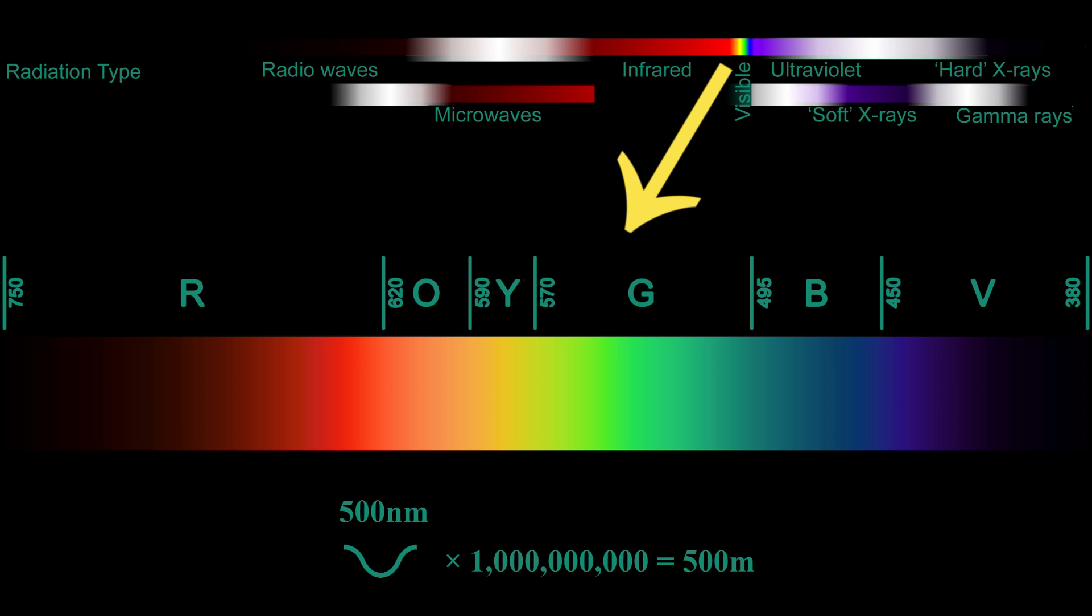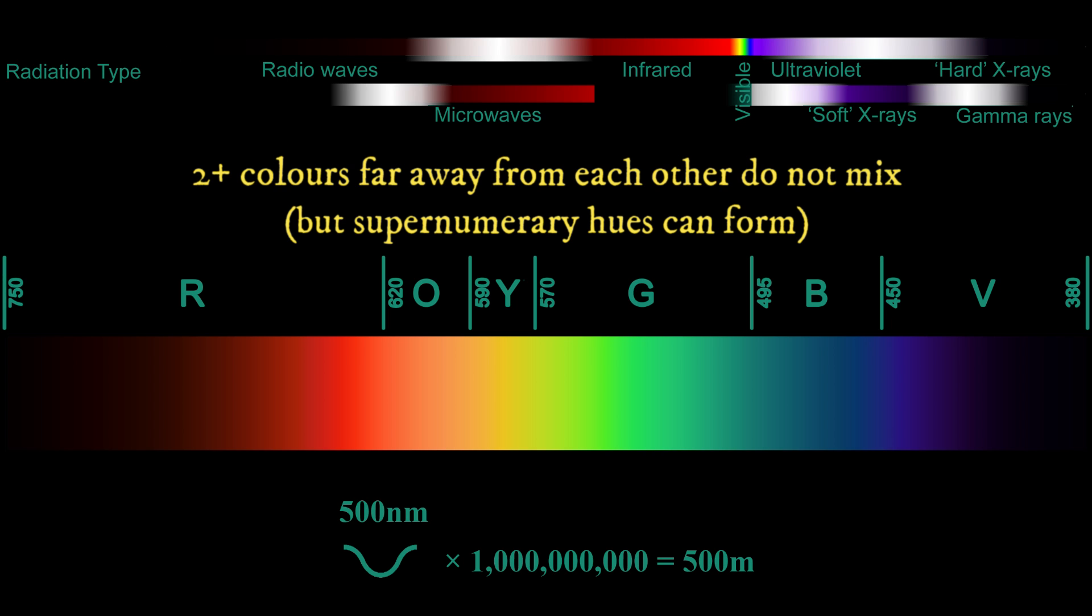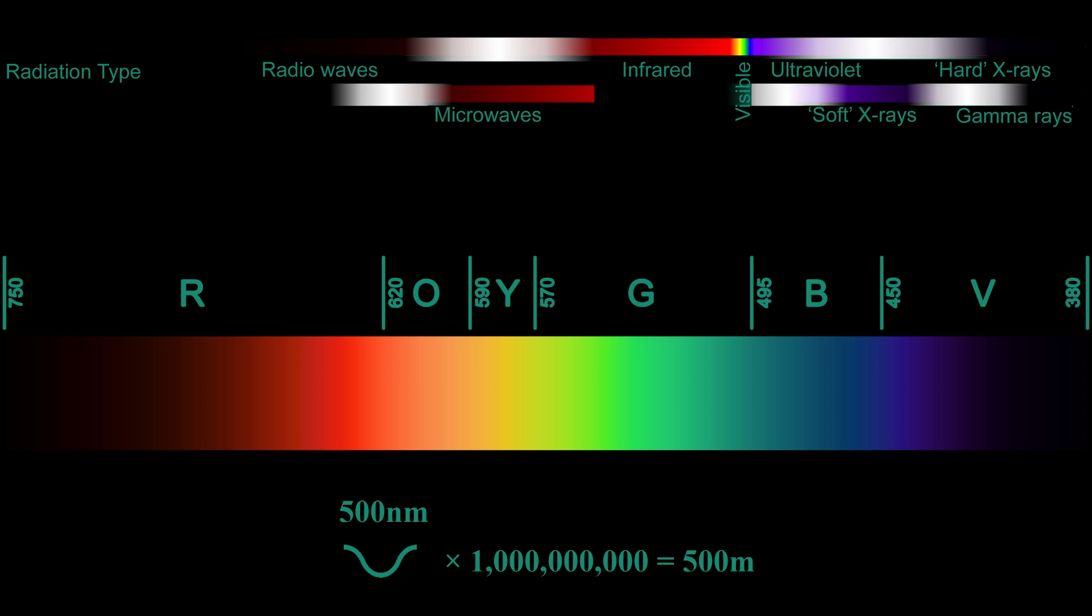As an example, blue-green light with a wavelength of 500 nanometers means that one billion of these wavelengths next to each other would be 500 meters long. You may have noticed that colors like pink and proper purple that isn't closer to a dark blue does not appear on this spectrum. This is because these colors can only be achieved by combining more than one color from the spectrum. But let's get to our final point regarding the rainbow and its colors. Note that this spectrum is continuous with gradual changes, rather than abrupt jumps between colors.